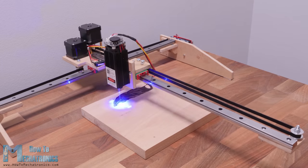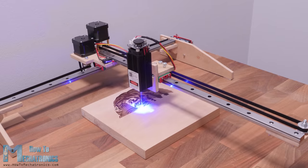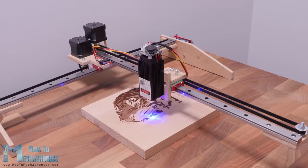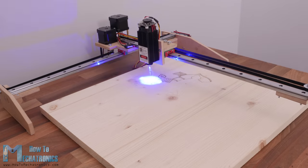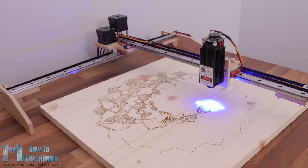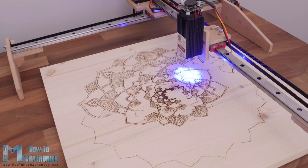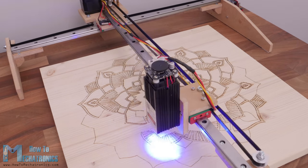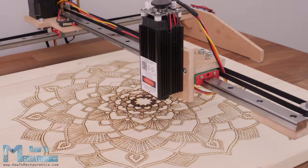Obviously this type of construction cannot provide much rigidity so we cannot use it as a CNC router or mill, though if we attach a more powerful laser we could use it to cut various materials, like this MDF board or other type of wood boards with quite good accuracy.